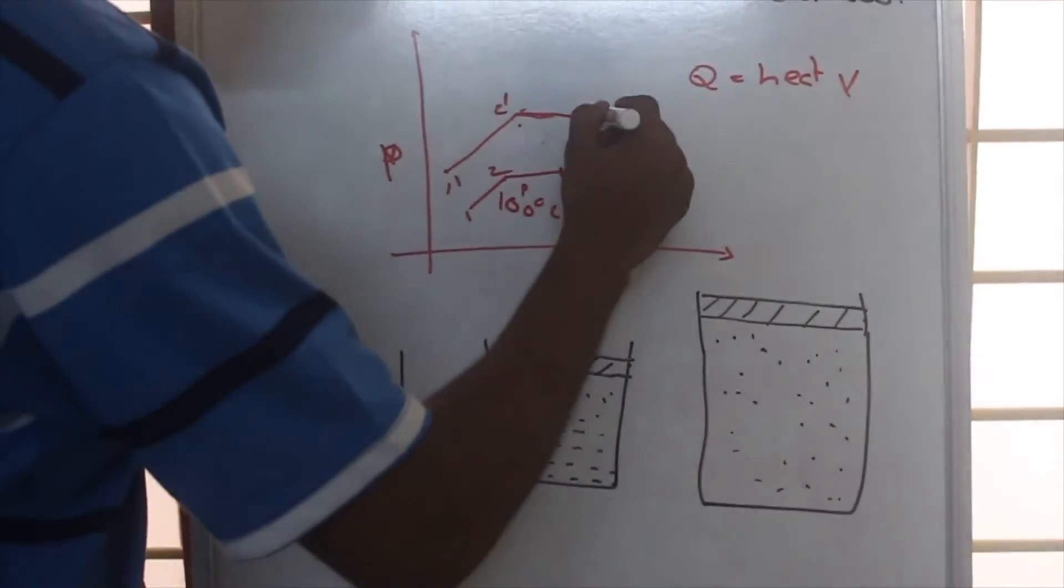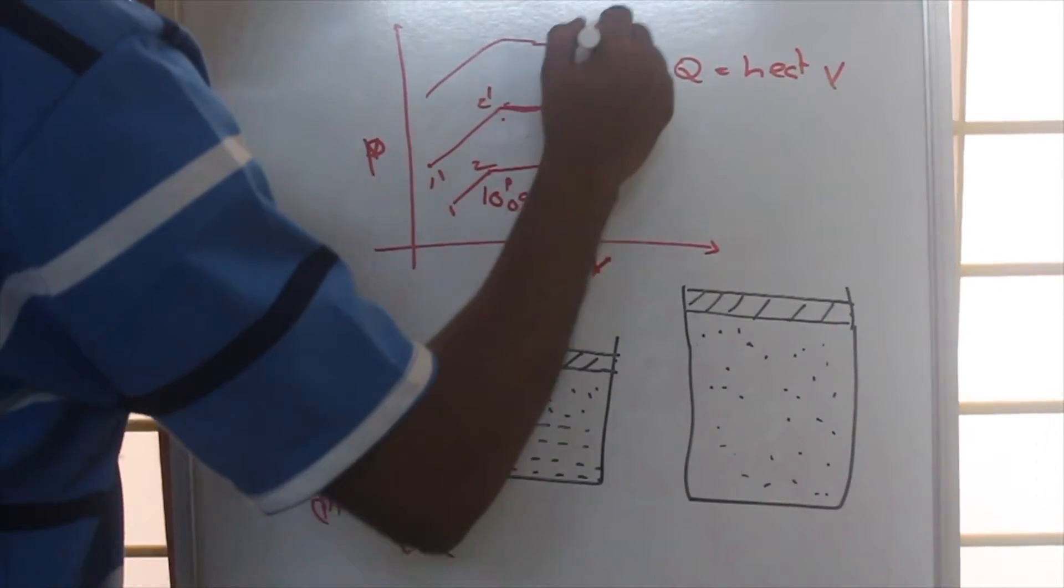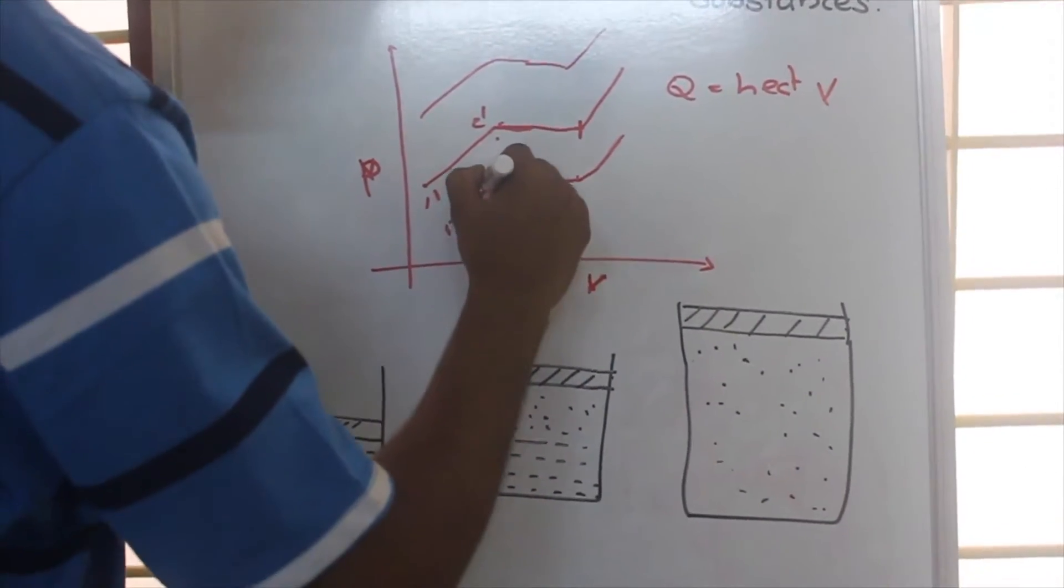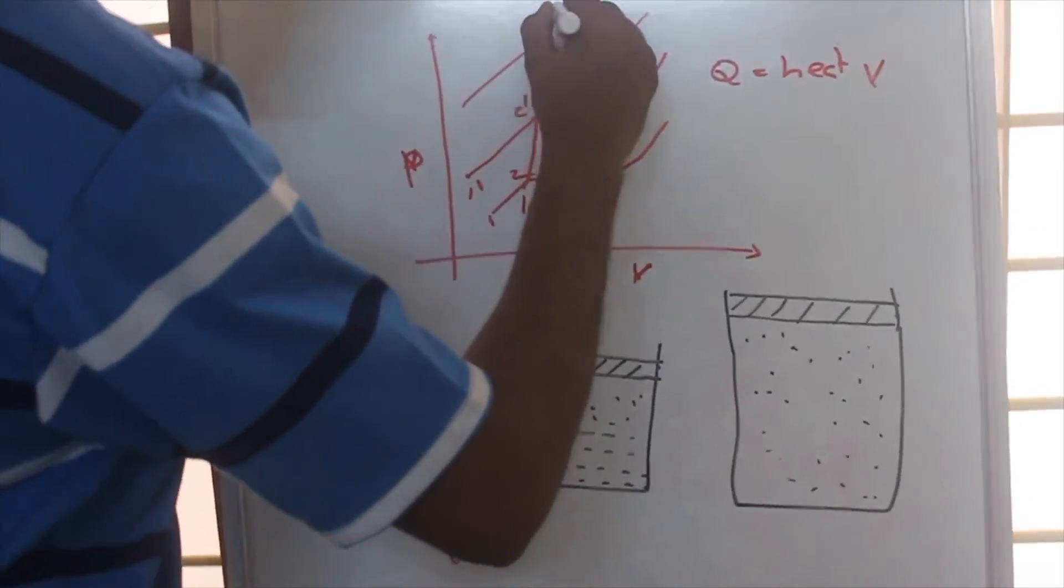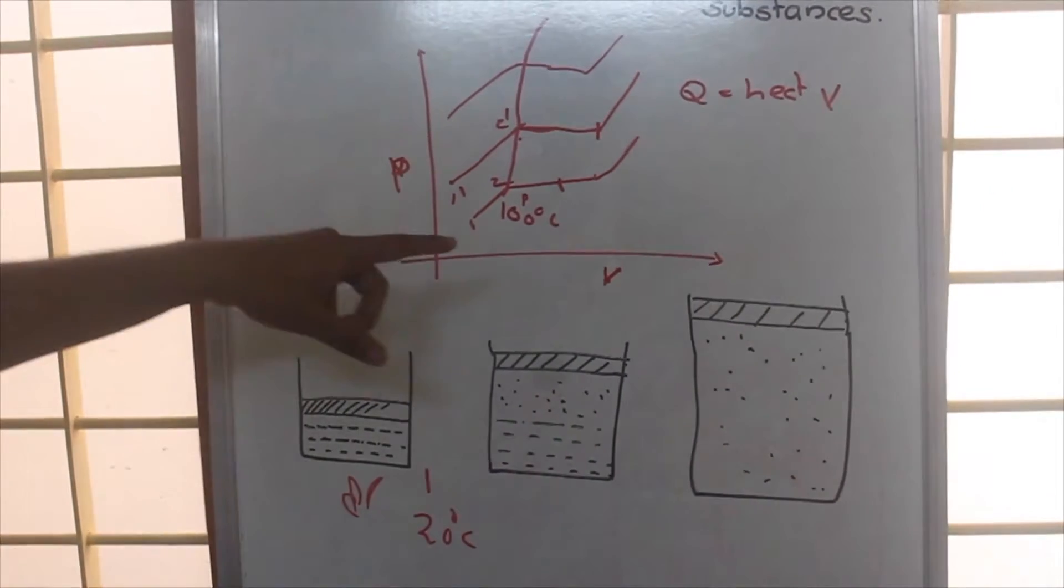Then after that the vapor will be heated. If we keep on drawing the graph, we will get something like this. At last, if we join these points, these points correspond to the point at which vaporization starts.